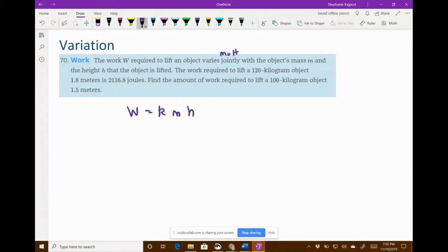Sometimes they say like mass squared, and then you have to add an exponent. In this case, we don't have any exponents. So we're just directly multiplying all these together. Your first thing with variation is to translate that first sentence. They always start out with your variable and then what it's equal to. You always have a K. And then what follows is your variables.